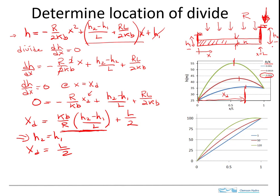That means XD will always be greater than L over 2, so it'll always be further along the x-axis, which is what we saw in this example. The distance that it is from the center point depends on what the head difference is and what the ratio of K and R are.